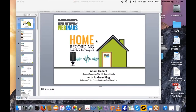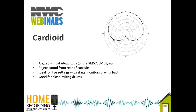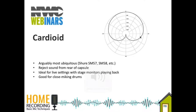The cardioid pattern is named because it's shaped like a heart. The benefit is that at the back of the microphone, not a lot of sound enters the capsule. So if you're behind the microphone it's quite quiet. It prevents feedback — if you've got a monitor wedge on stage, that sound comes out and hits the back of the microphone, and because of this pickup pattern you won't get as much feedback as you would with an omni pattern.